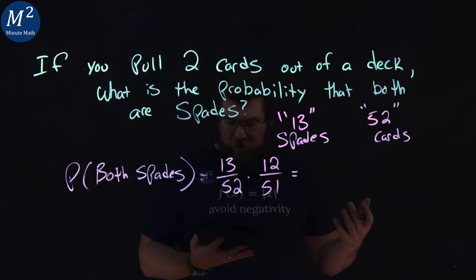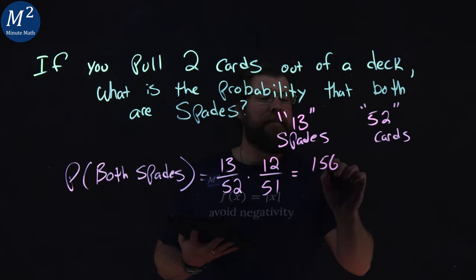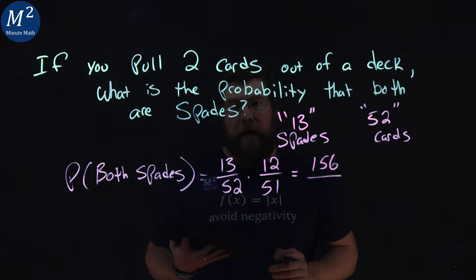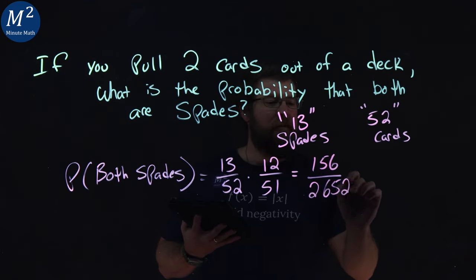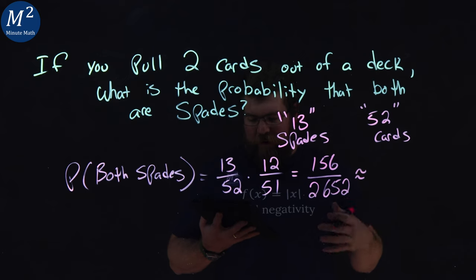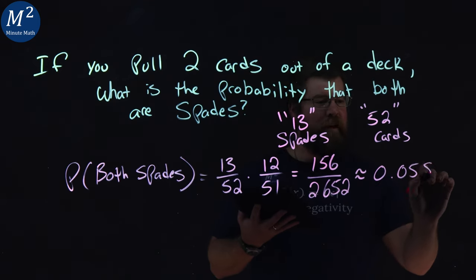So, now we multiply this probability out. 13 times 12 is 156, and 52 times 51 is 2652. This simplifies approximately to a decimal of 0.0588,